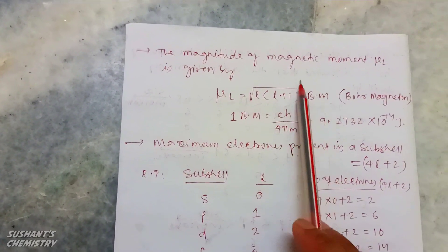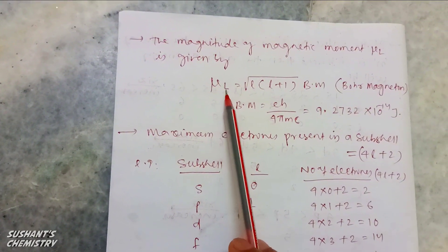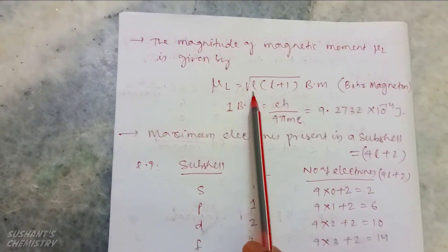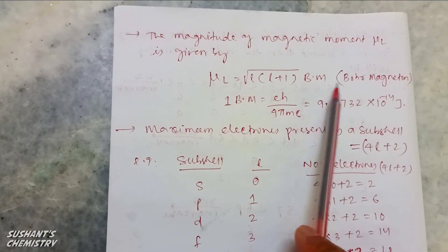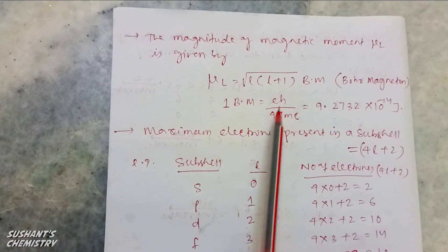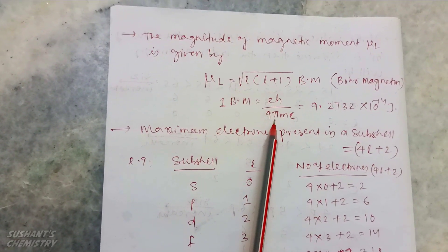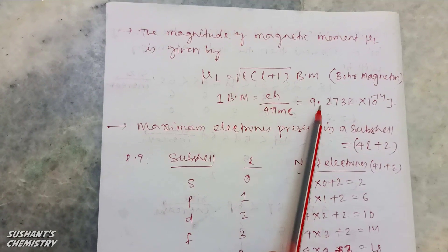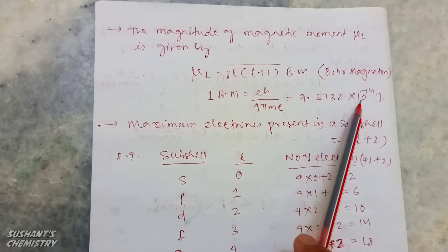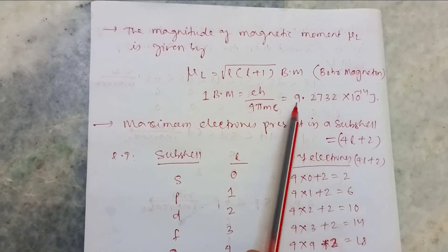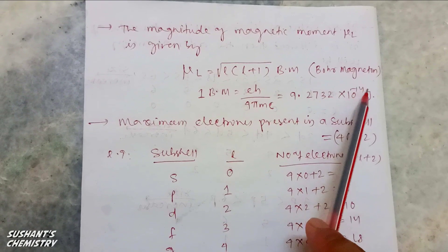The magnitude of the magnetic moment mu_L is given by the expression: mu_L equals the square root of l(l+1) times Bohr magneton (BM). One Bohr magneton equals h divided by 4 pi m c. Putting in the values, 1 BM equals 9.2732 times 10 to the power minus 24 Joules per Tesla.